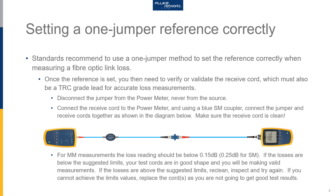Once you have set your reference, you also need to verify or validate the receive cord. The receive cord must also be a test reference grade cord to ensure accurate loss measurements. Test reference cords have low loss so as not to contribute to the overall loss measurement you are making.